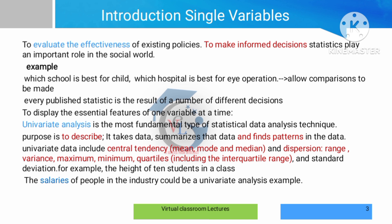For example, to evaluate the effectiveness of an existing dataset, we can take a particular single variable and evaluate its effectiveness to make decisions. Real-world examples include deciding which school is best for a child, or evaluating hospital operations. Sometimes a single factor analysis — that is, univariate analysis — is sufficient to reach a conclusion.